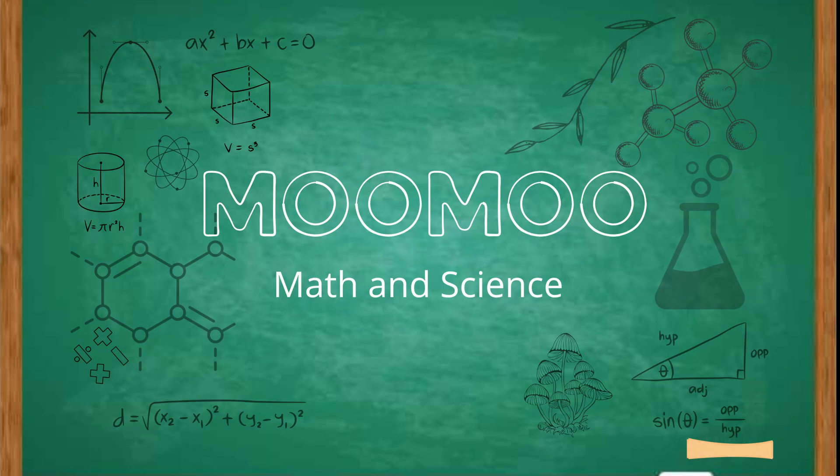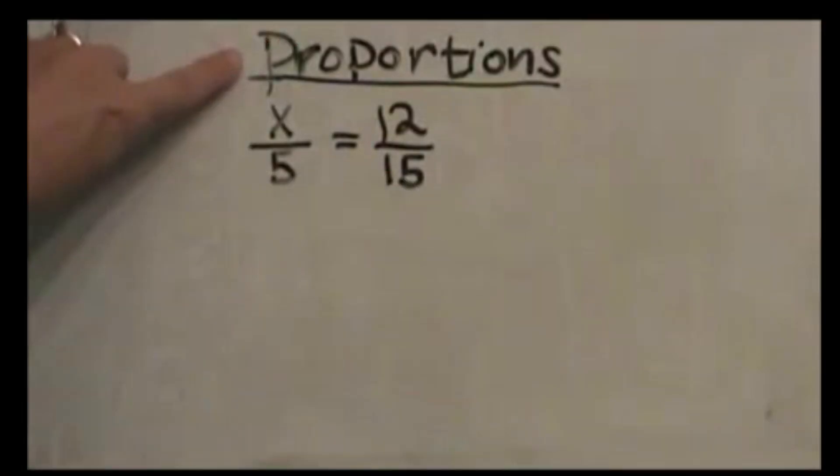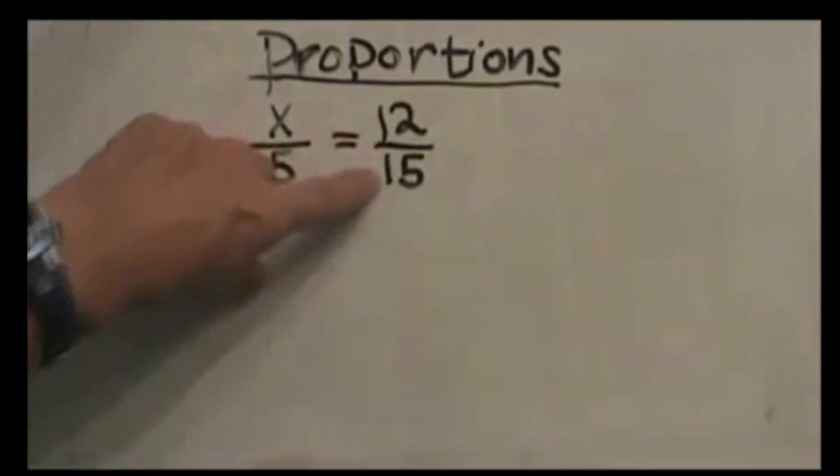Welcome to Moo Moo Math. Today we're going to talk about how to solve a proportion. We're looking at a proportion as two fractions that are set equal to each other with one variable. We have x over 5 equals 12 over 15.